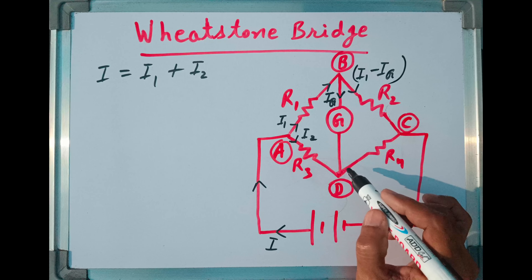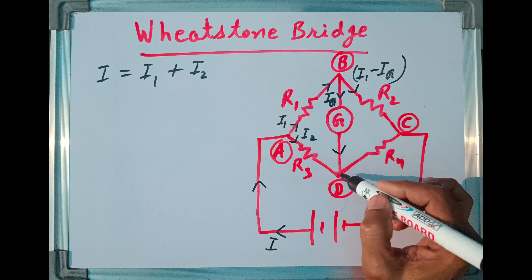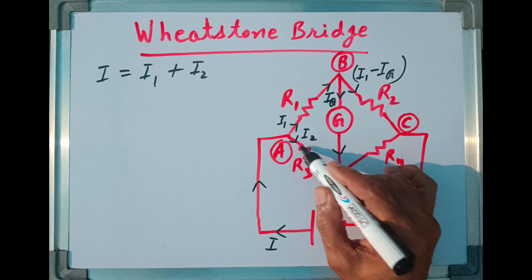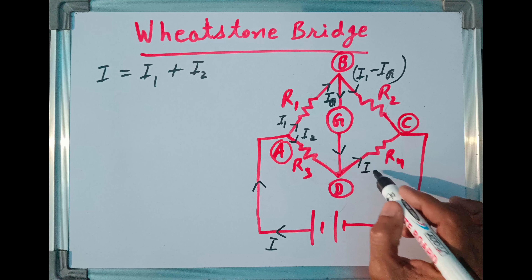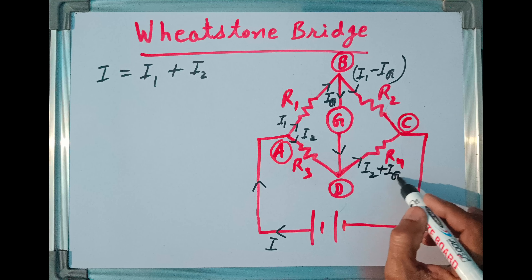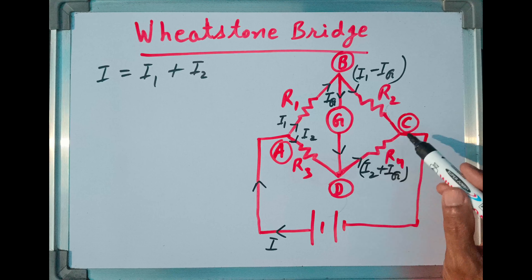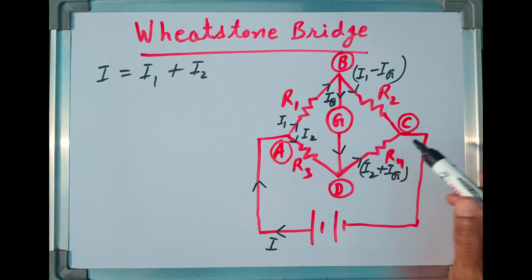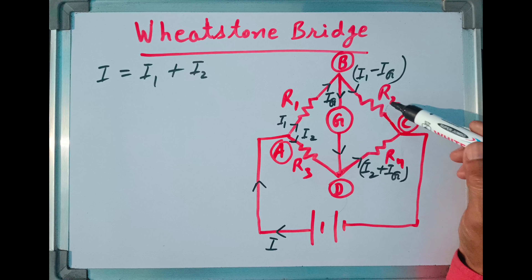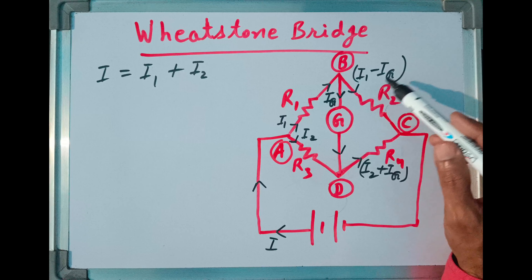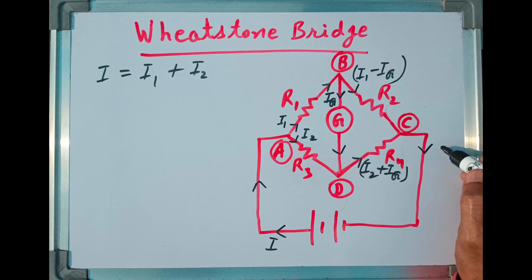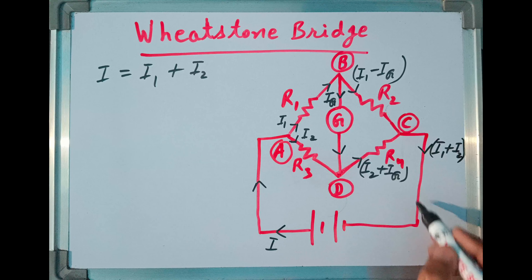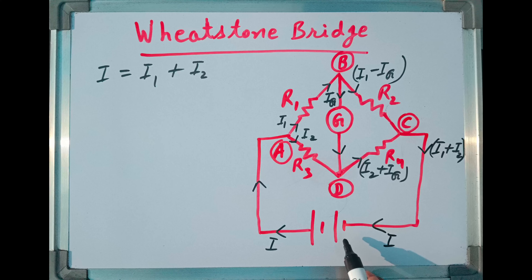Now let us come to point D. From the galvanometer, current Ig is coming and from junction A, current I2 is coming. Both these currents combine at point D and in this portion current flowing is I2 plus Ig. This I2 plus Ig current reaches point C through resistance R4, and current I1 minus Ig reaches point C through R2. Both currents combine at point C giving rise to I1 plus I2, which equals I. So current I reaches the negative terminal of the battery.